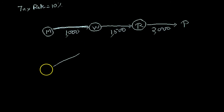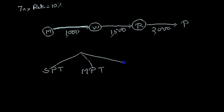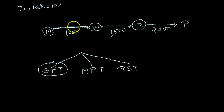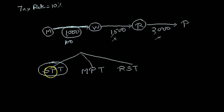According to Single Point Tax, tax will be levied only at the first sale. So here the first sale is the manufacturer selling to the wholesaler. Applying the tax here: 10% of Rs. 1000 comes to Rs. 100 as the tax. There will be no further tax in this system. So the total tax recovered by the government under Single Point Tax will be Rs. 100.